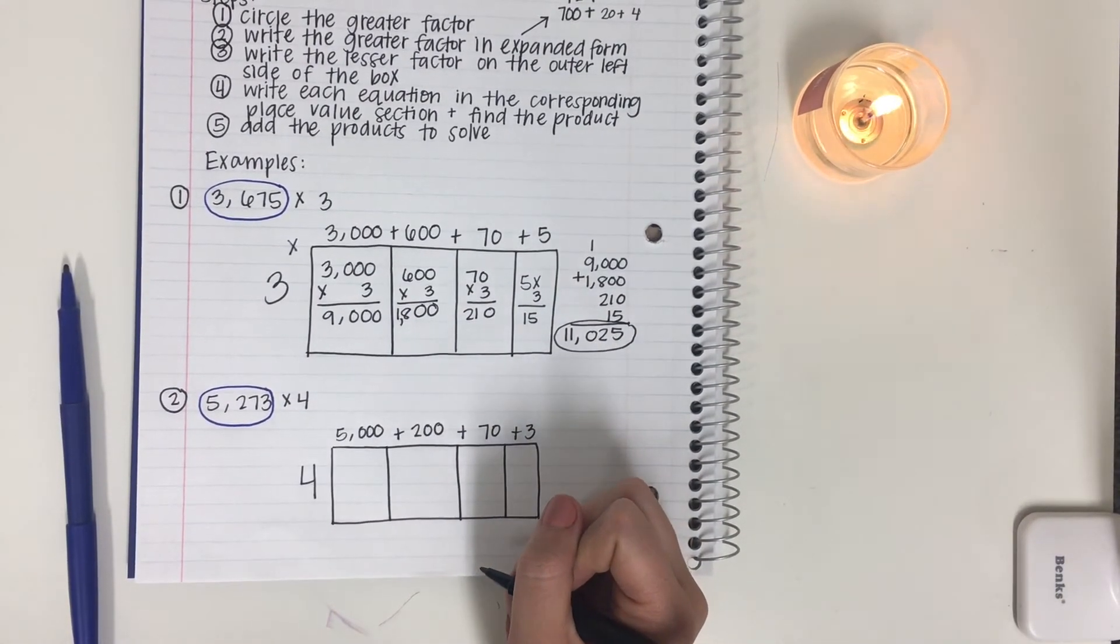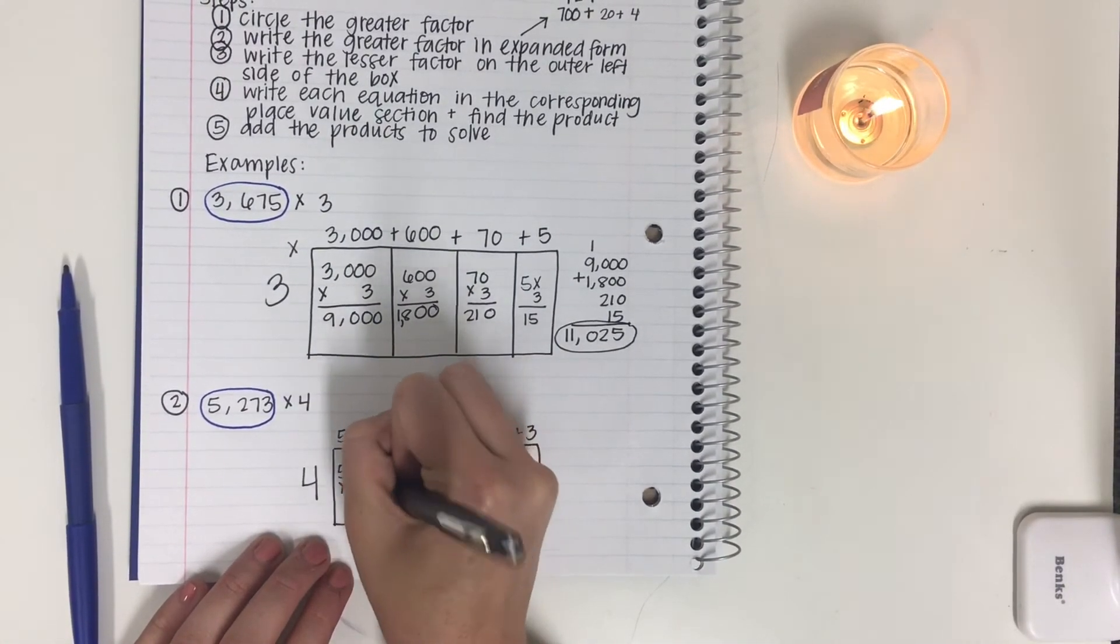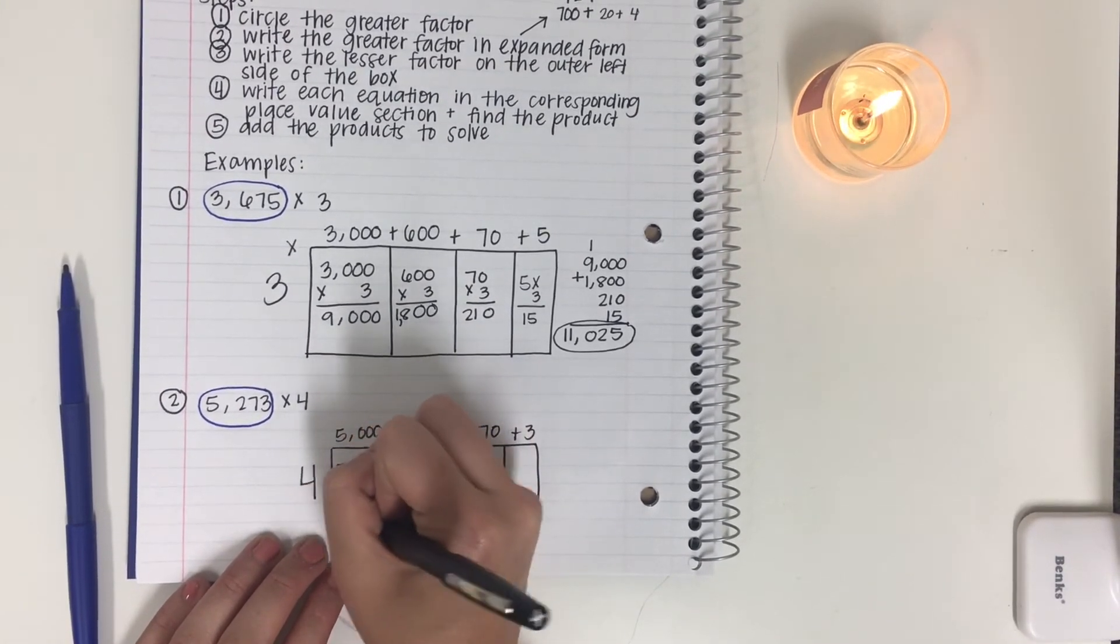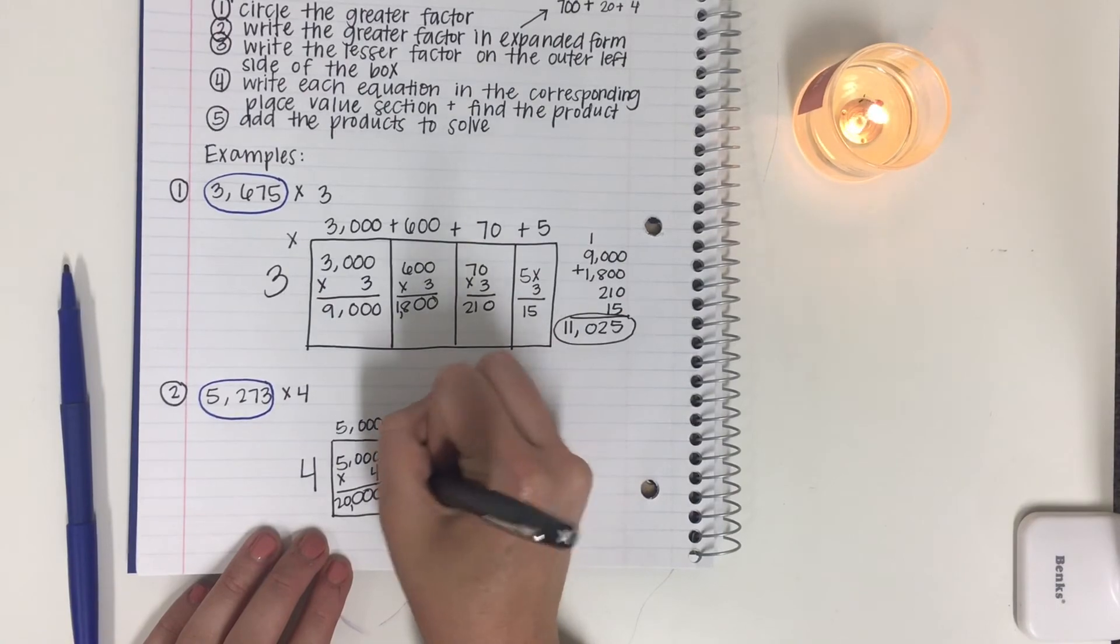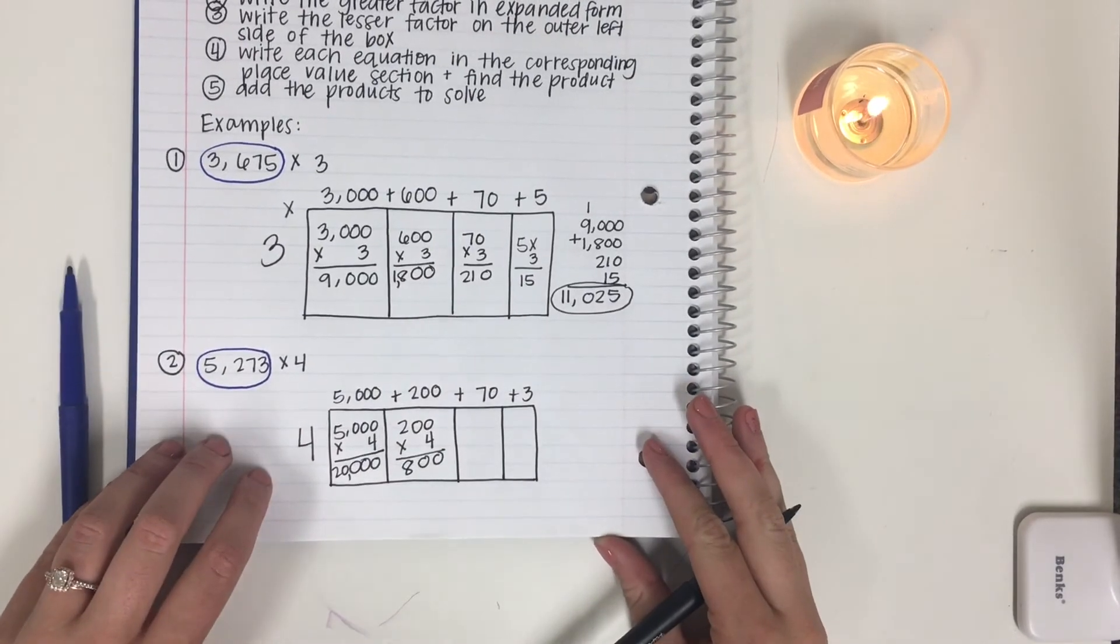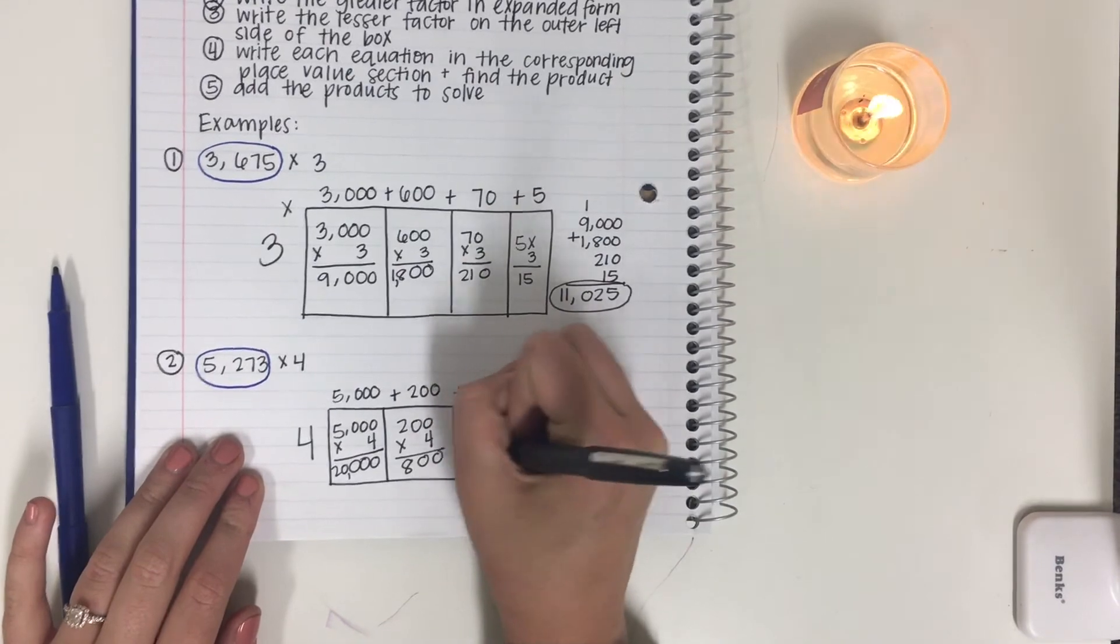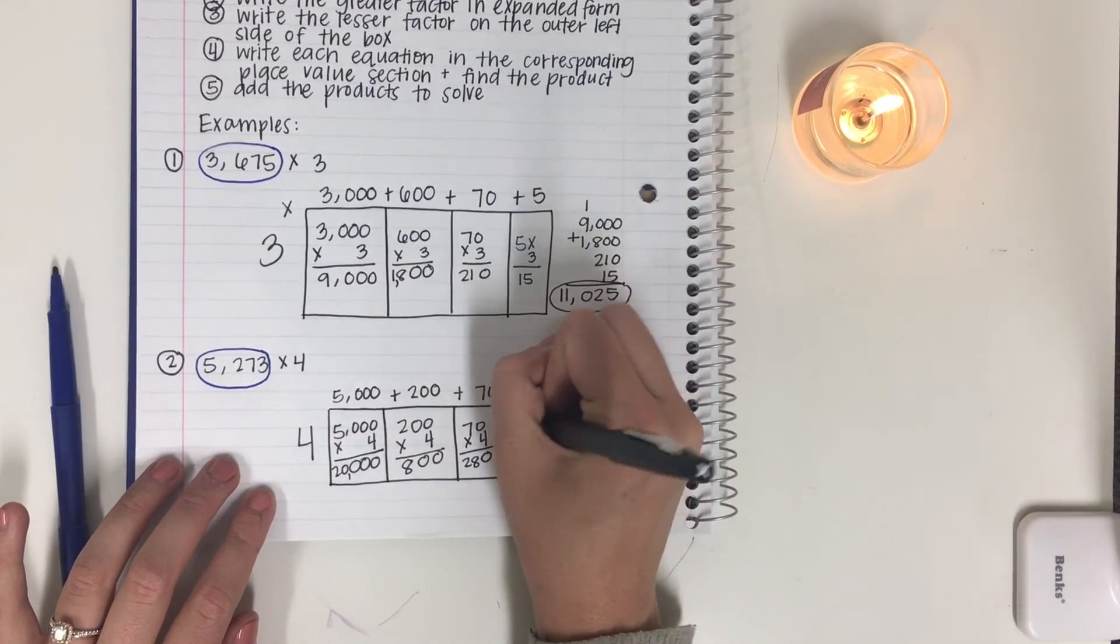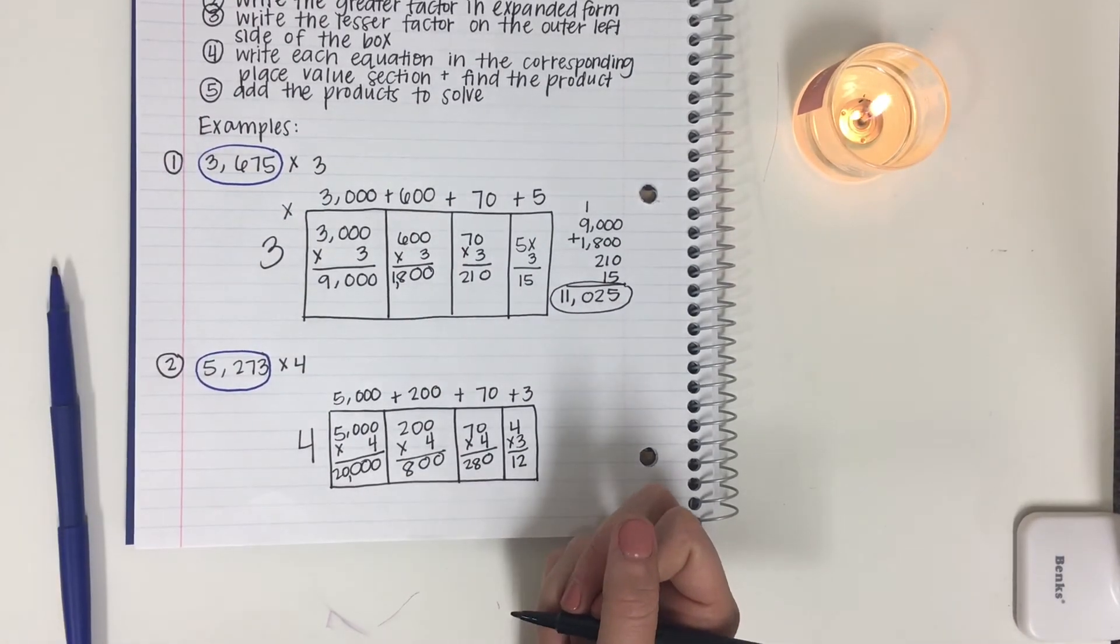Now we're going to do our equation and find our products. So 5,000 times 4, 0, 0, 0, 20. So we have 20,000. 200 times 4, 0, 0, 0, 800. 70 times 4. 70 times 4. We got 0. 7 times 4 is 28. So 280. 4 times 3 is 12.